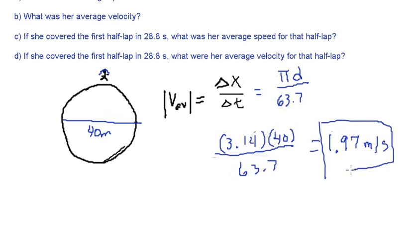And the units of velocity are meters per second. Okay, so this is the average speed for the girl if she's going around this circle. This is her average speed.